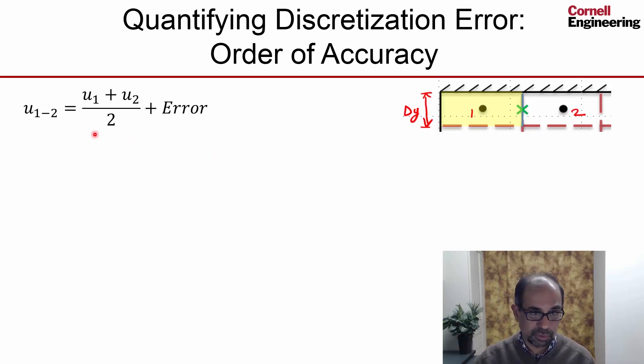And that's the equation we had. So that's the value at the face, and that's the value at the adjacent cell centers. And in the process, we introduced an error. Here, let's quantify that error.